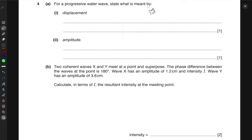For a progressive water wave, state what is meant by its displacement. Now, a displacement for a progressive water wave is the distance that this water wave will cover in a known direction from its equilibrium position.